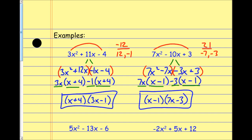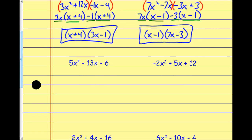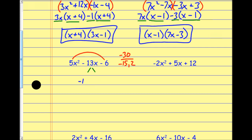Doing a couple more to keep the rhythm — I build a bridge: that's negative 30. Always include the signs. Two numbers that multiply to negative 30 but add to negative 13 are negative 15 and positive 2. I split up the middle term into negative 15x and plus 2x. It doesn't matter what order I write these in — I could write 2x minus 15x and get the same result. I'll go with negative 15x and plus 2x.